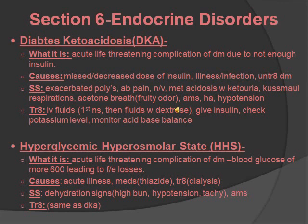Another acute life-threatening complication is hyperglycemic hyperosmolar state (HHS) — blood glucose over 600, leading to fluid and electrolyte loss. Causes include acute illness, medications like thiazide diuretics, and treatments like dialysis. Signs and symptoms include dehydration, high BUN, hypertension, tachycardia, and altered mental status. Treatment is the same as DKA: fluids, insulin, potassium monitoring, and acid-base balance.